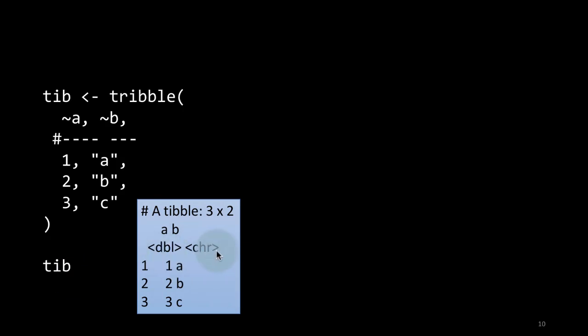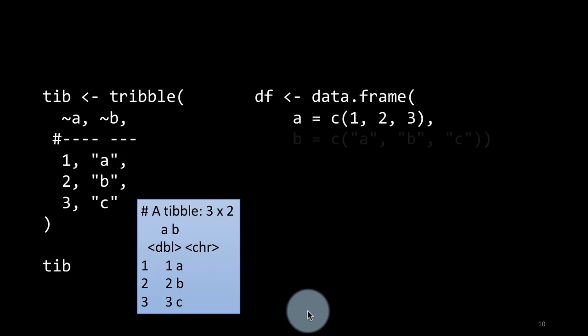It's a tibble. It's got two columns. And of course, the column types are also shown. When you're using a tibble, you also see the column types. That's a nice thing. And I'm creating a data frame with the same corresponding values. This time I'm calling it DF. Notice that when you create a data frame, you can create it by indicating the columns and the values of the columns. So the first column is called A. Its values are 1, 2, 3. Second column is called B, and its values are A, B, C.